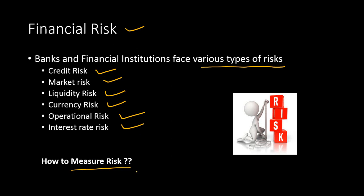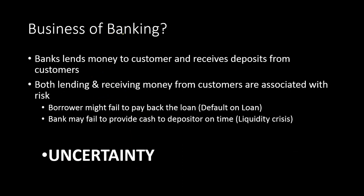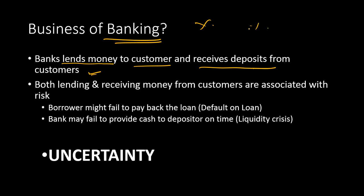So what is the business of banking? Banks essentially lend money to customers and receive deposits from customers. They lend at a certain interest rate and pay a lower interest rate on deposits. The spread or difference in interest rates is the profit. That's how banks operate and make money. But both lending and receiving deposits are associated with different types of risks.